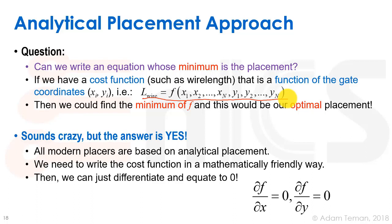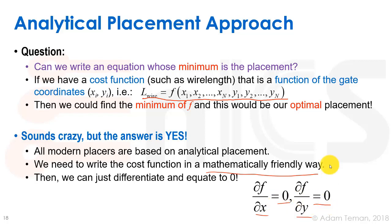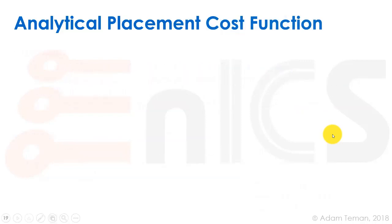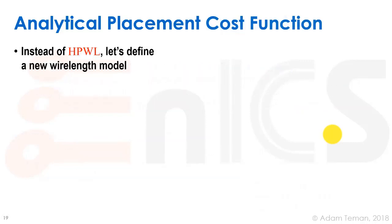That sounds tough, maybe even crazy, but yes — all modern placers nowadays are based on analytic placement. The way to do it is we write the cost function in what we call a mathematically friendly way. We change our cost function so it adheres to this type of approach, and then we can just differentiate by x and by y, equate to zero, and we'll find the minimum of the entire equation.